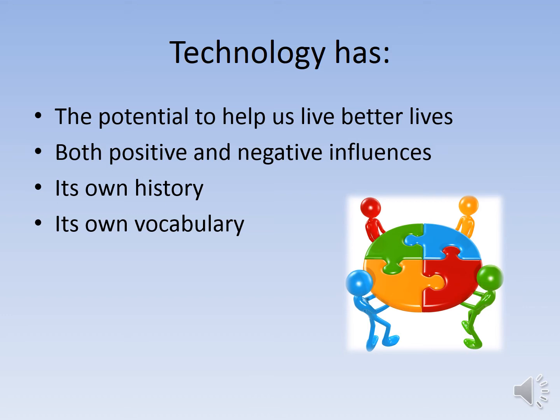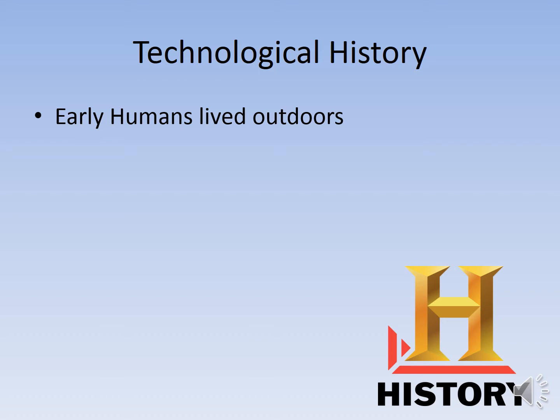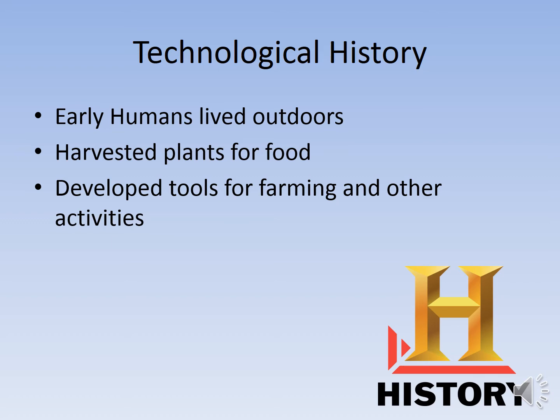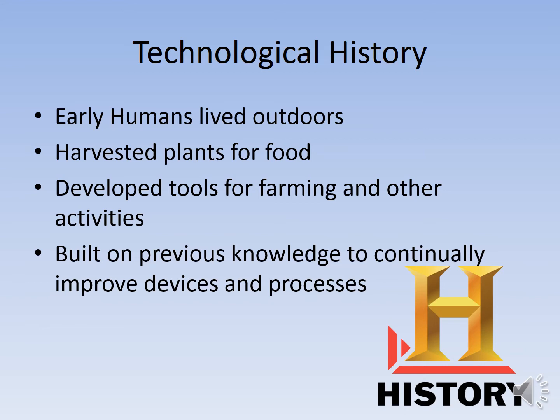Technology also has its own vocabulary. One of the things we need to make sure we do is use consistent vocabulary so that we all know what we're talking about. Looking back at technological history, early humans did live outdoors, they harvested food and plants, they developed tools for farming and other activities, and they built on previous knowledge to continually improve devices and processes.